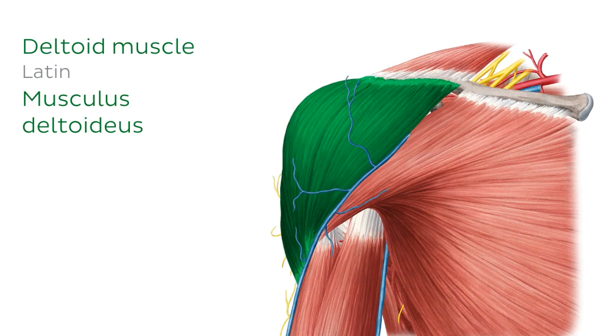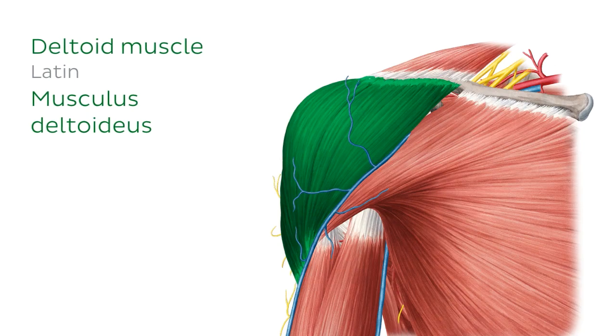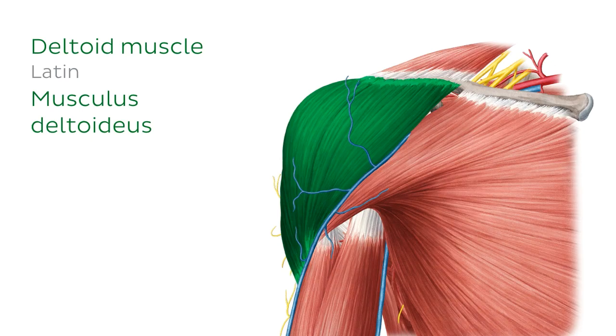Here, we're looking at the deltoid from an anterior perspective. Before we go on to discuss the attachment points of this muscle, it's important to know that the deltoid has three parts, which are named based on their origin.